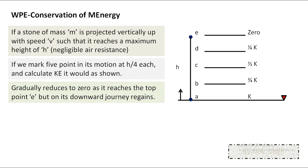At the top, the stone has zero kinetic energy. On its downward journey it regains whatever kinetic energy it lost. When it comes back to each point, it has the same kinetic energy as on the upward motion, and when it reaches the starting point it regains entire kinetic energy K. The direction is opposite but kinetic energy is the same.